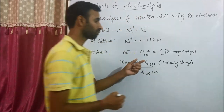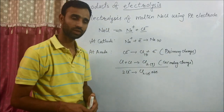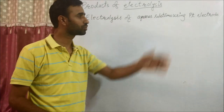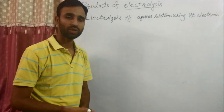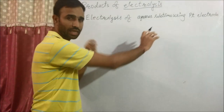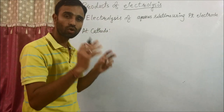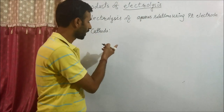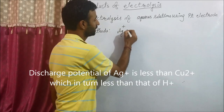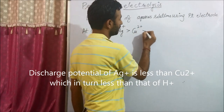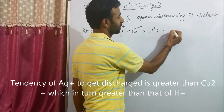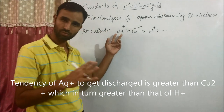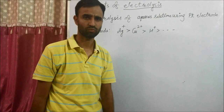But Cl gas does not exist as such, so 2 Cl combine to give Cl₂ gas. Overall reaction is: 2 Cl⁻ → Cl₂ gas + 2 electrons. This is called secondary change. Secondary change takes place if the product formed in the primary change is not the stable one. To find out the products of electrolysis of aqueous solutions using platinum electrode, we follow a trend. At cathode, there is always a competition with aqueous solution (water, H₂O). The order is Ag⁺, Cu²⁺, then H⁺, and so on. Tendency to get discharged of silver is maximum, then copper, then H⁺, then other metal ions.